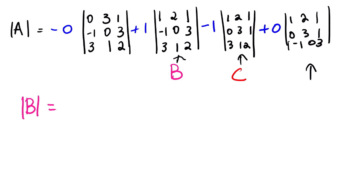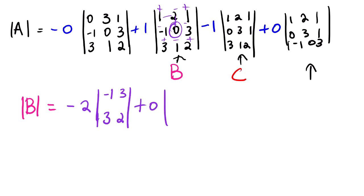For the determinant of B, we are going to use cofactor expansion again, expanding along the second column. Creating the sign pattern: plus, minus, plus, minus, plus, minus, plus, minus, plus. The first element is negative 2, with 2x2 sub-matrix: negative 1, 3, 3, 2. The next element is positive 0, with 2x2 matrix: 1, 2, 3, 2. The last element is negative 1, with 2x2 matrix: 1, 1, negative 1, 3.